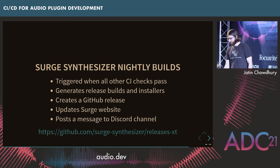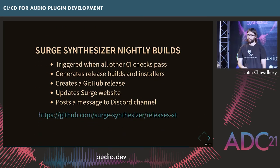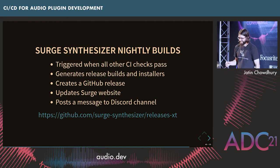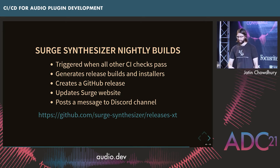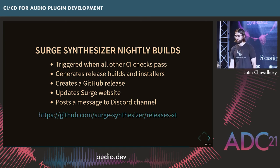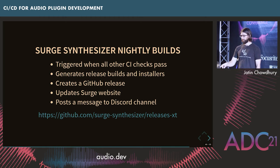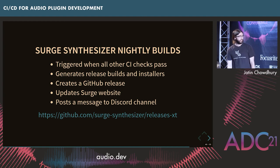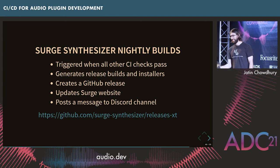They also have a nightly build pipeline that runs even faster than mine. As soon as you make a commit and all the CI checks pass, it triggers the nightly build pipeline, generates release builds and installers, signs and notarizes everything, creates a GitHub release, updates their website, and posts a message to their Discord. So if you're a nightly build user, you can subscribe to that Discord channel and get a notification every time there's a new build for you to test.